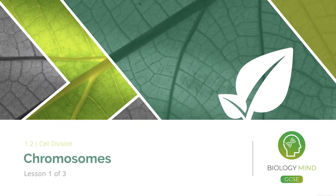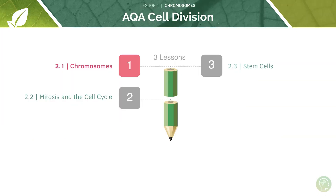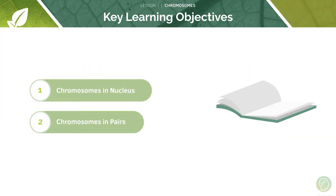Hello and welcome to tutorial one of three on cell division. Today we'll be looking at chromosomes and as part of that we're going to be discussing chromosomes in their natural location which is the nucleus, and also discussing the concept of chromosomes being kept in pairs.